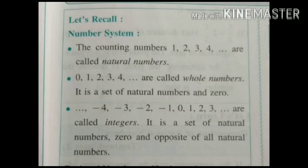Before learning rational numbers, let's recall the number system. Basically there are three types of numbers: natural numbers, whole numbers, and integers. Natural numbers are starting from 1, 2, 3, 4 and infinite. Natural numbers are also called counting numbers because for counting of anything, we start from 1.